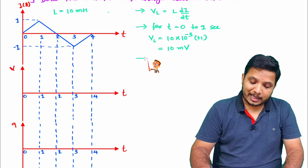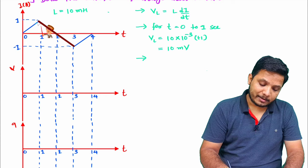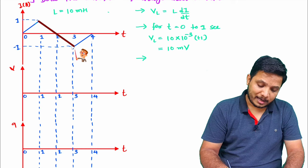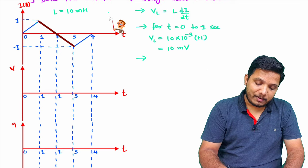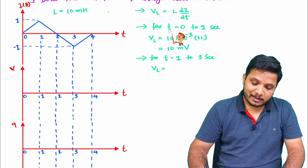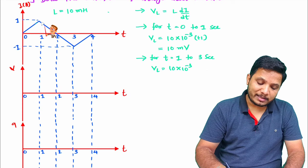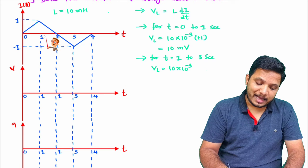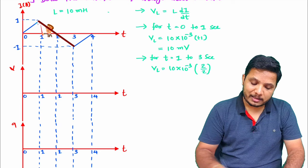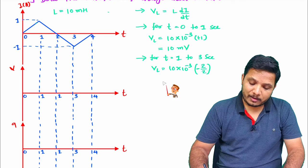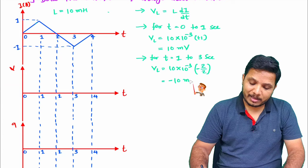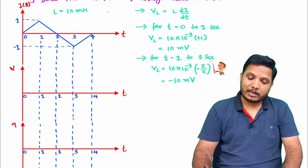For the line from 1 second to 3 seconds, we need to identify L and calculate di/dt. VL = L = 10 millihenry multiplied by the slope, giving VL = −10 millivolts during t = 1 to 3 seconds.